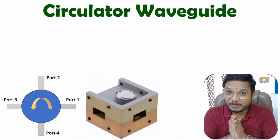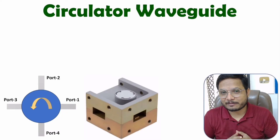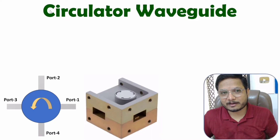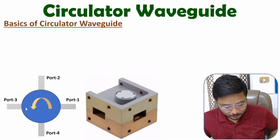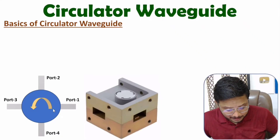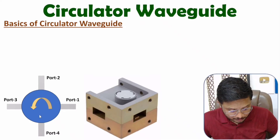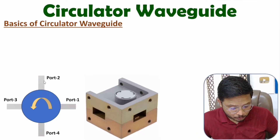Welcome to Engineering Funda. In this video I'll explain circulator waveguide. Here is the symbol of circulator waveguide — I have considered four ports in total: port one, port two, port three, and port four. The arrow indicates the direction of circulation. If you give input at port one, that signal will go to port two.